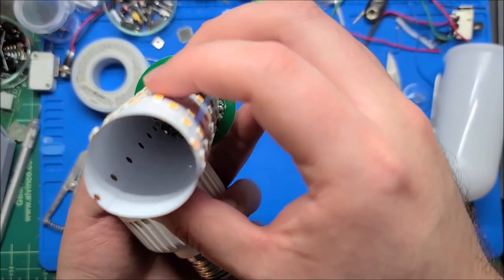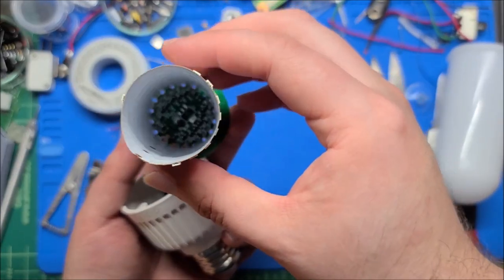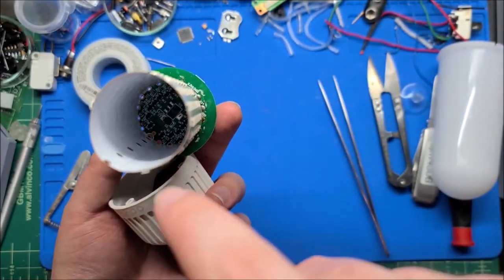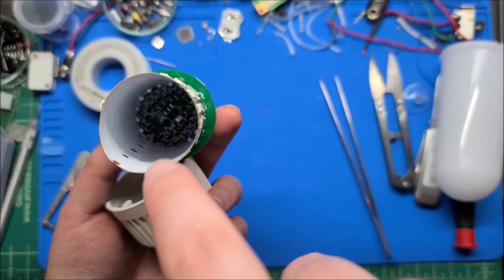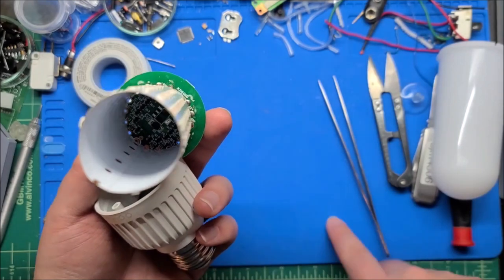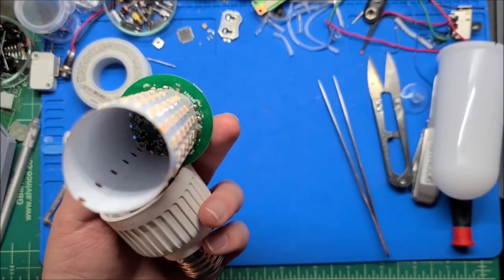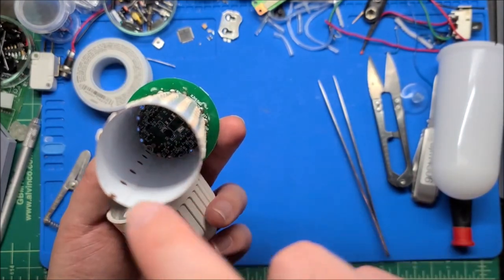So yeah, this chip runs the show. And if you can see inside there, there is a footprint for what appears to be like a regulator package, U2, that's not used. There is a diode and a bunch of transistors.